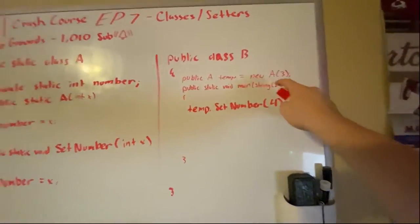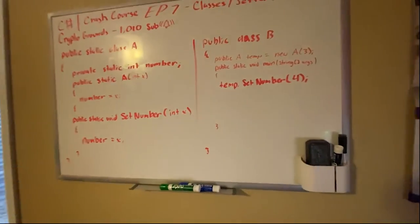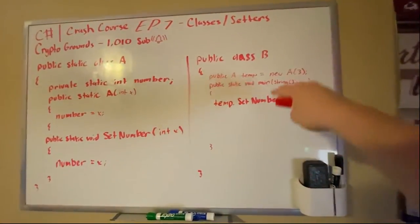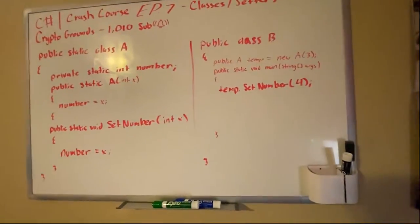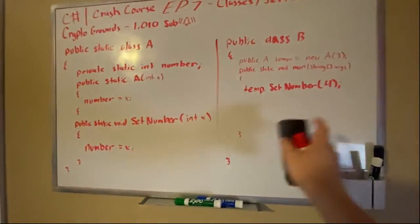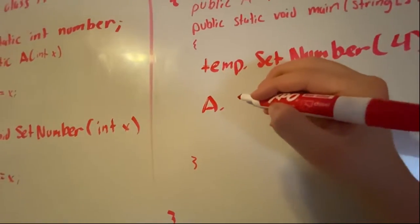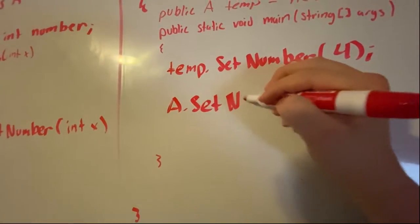So now in this situation, in this setup right here, we don't have to have static, because we're creating objects. Let's say we want to also do a.SetNumber.